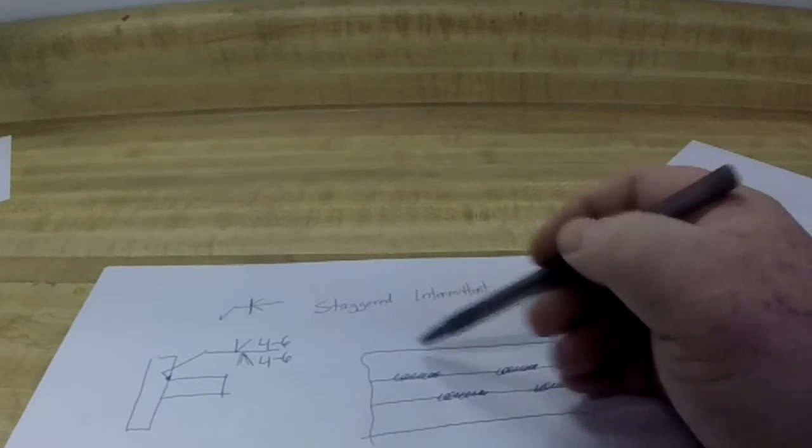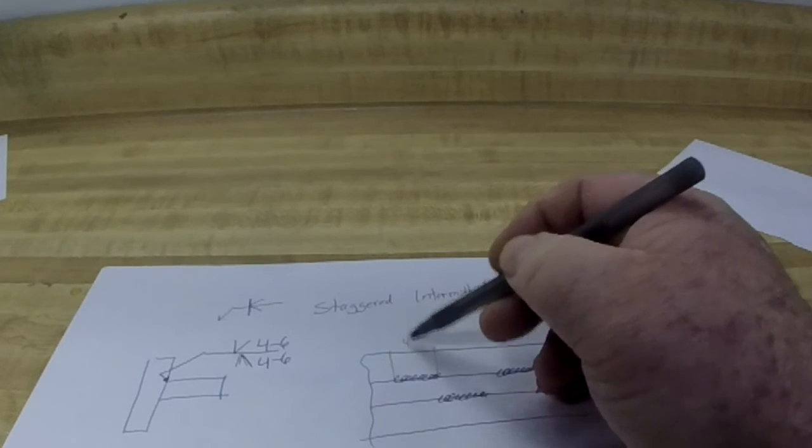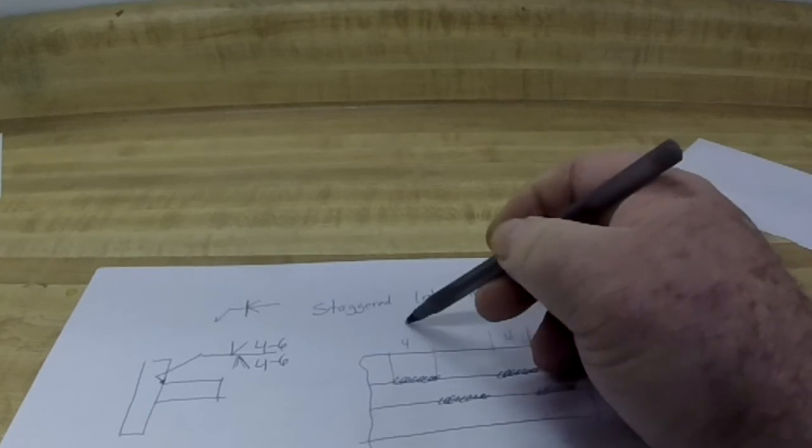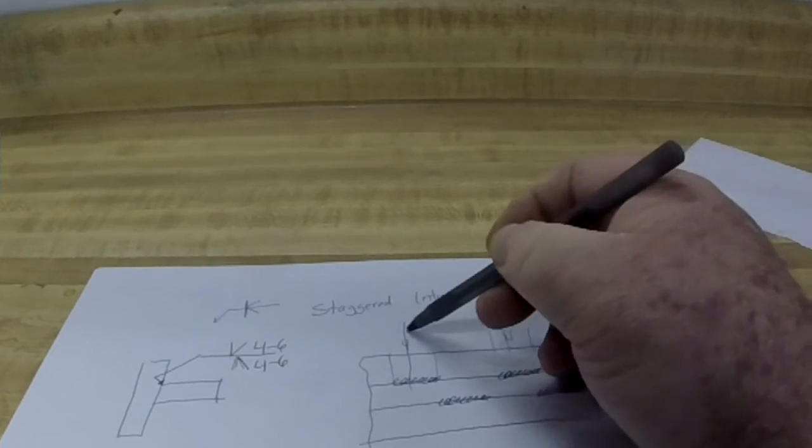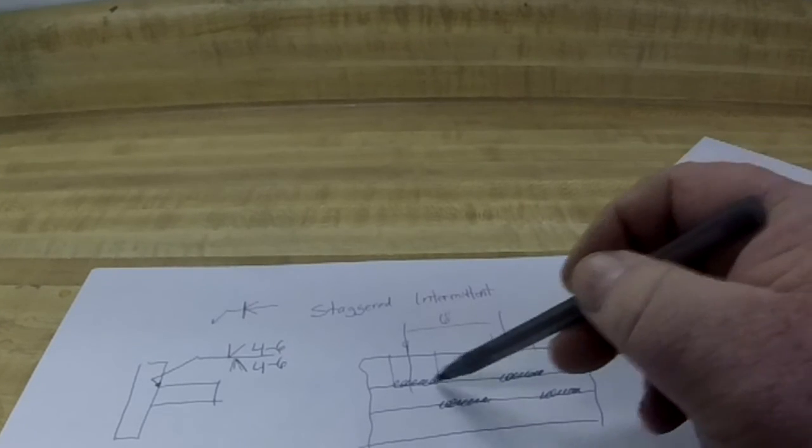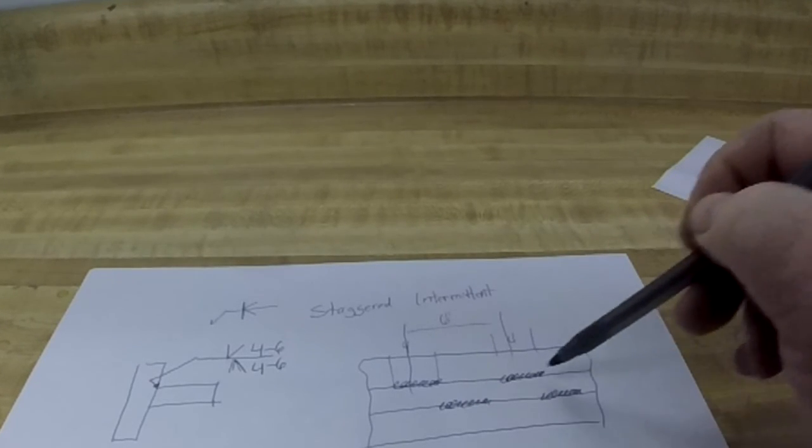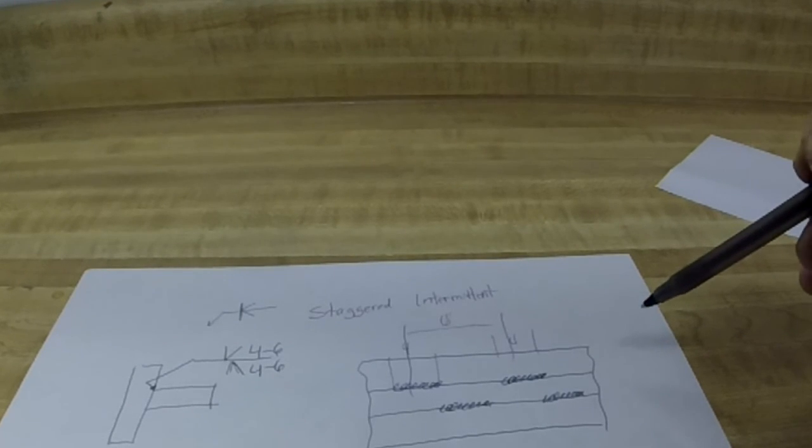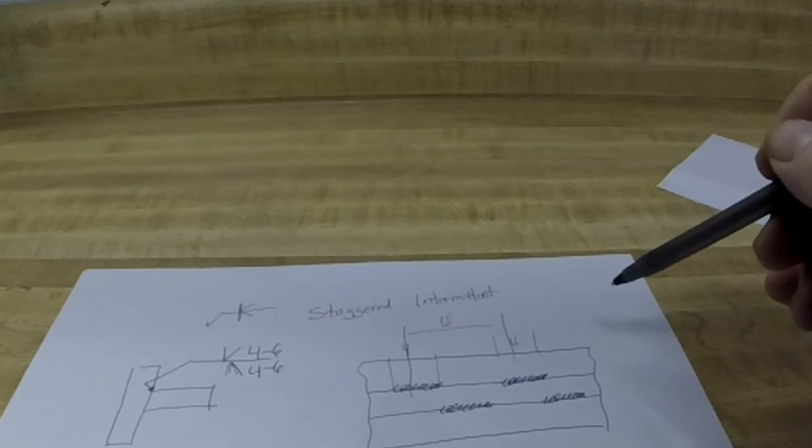While we still have our four-inch welds with our six-inch centers, we are staggering them, and the reason that's done is to just reduce heat input and distortion into the pieces.